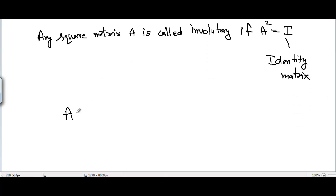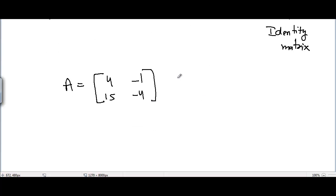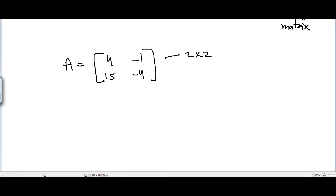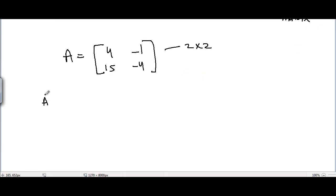Let's suppose we have A equal to [[4, -1], [15, -4]]. It's a two-dimensional matrix, 2 by 2. Now in order to find A squared, I will have to multiply this matrix with itself.